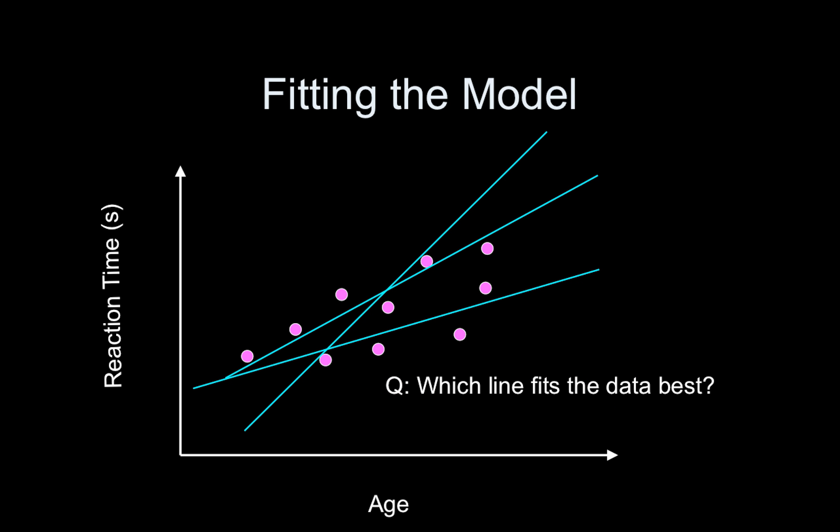So how are we going to estimate these parameters? How do we fit the model? So here I've tossed a couple of candidate lines on the data, and some of them, you know this one looks pretty bad, but these other two look decent. So which line fits the data best? How do we quantify that?